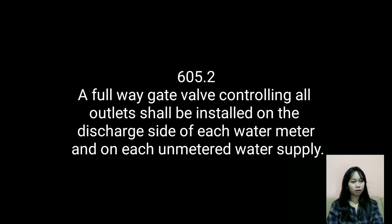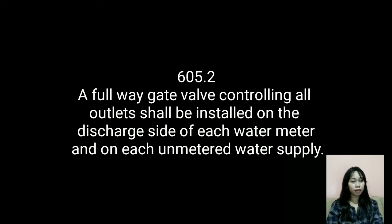Such shut-off gate valves shall be accessible at all times. A full-way gate valve shall be installed on the discharge piping from water supply tanks, at or near the tank. A full-way gate valve shall be installed on the cold water supply pipe to each water heater, near the water heater. A full-way gate valve shall be installed for each apartment or dwelling occupied by more than one family, in addition to the main supply shut-off valve. Individual shut-off gate valves shall be provided for each fixture.